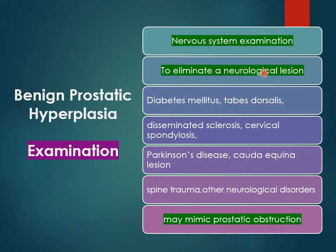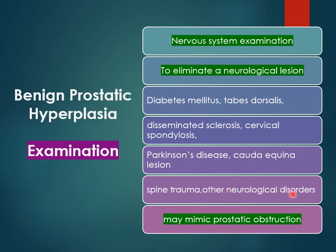Examination of the neurological system is of utmost importance because neurological problems can mimic prostatic obstruction. These include diabetes mellitus, tabes dorsalis, disseminated sclerosis, cervical spondylosis, Parkinson's disease, cauda equina conditions, spinal trauma, and other neurological disorders.